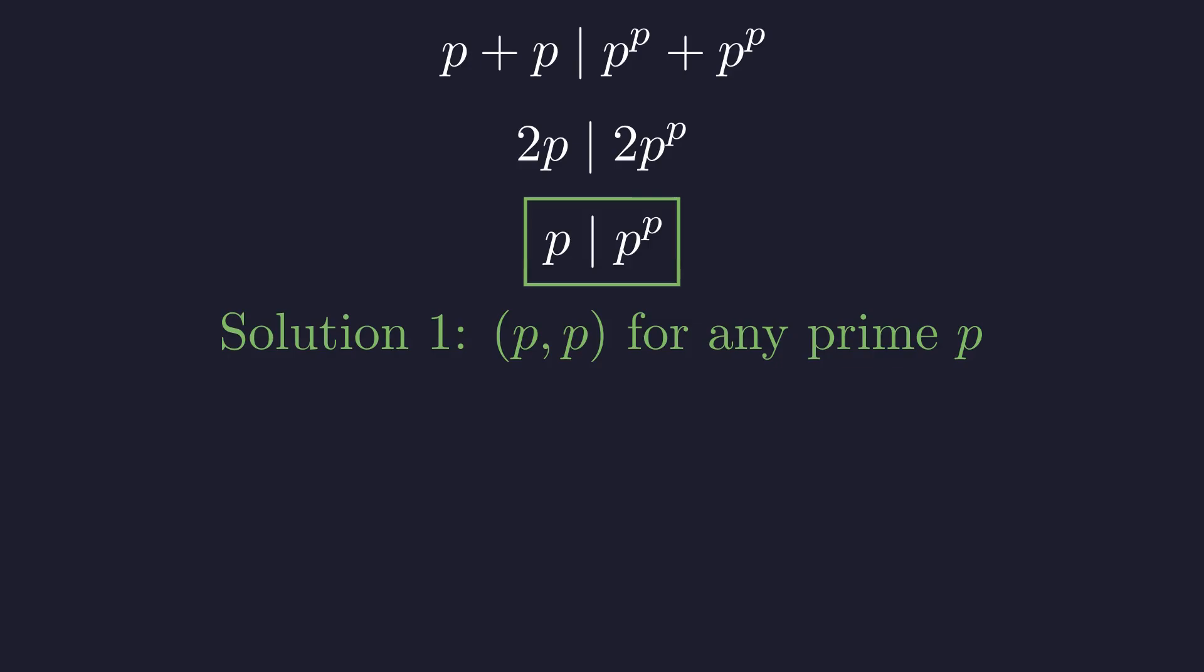This means any pair of identical primes like 2, 2, 3, 3, or 17, 17 is a valid solution. Now, you might be thinking, okay, p equals q works, but isn't that just a trivial case? Does it really count?